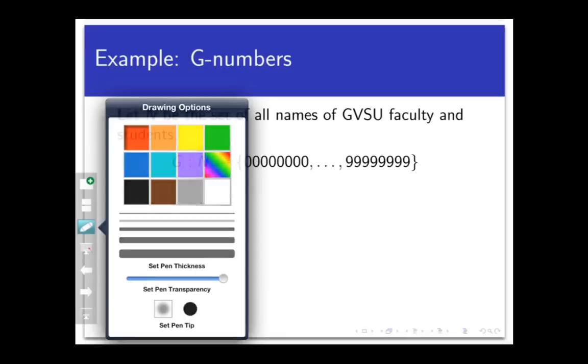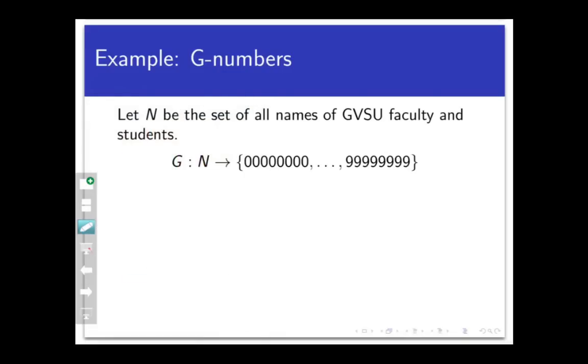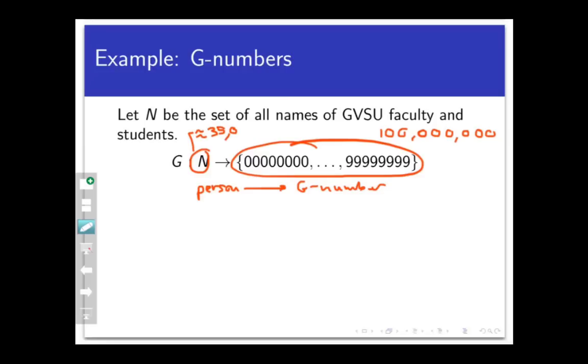Here's a different example. The function that maps the set of all GVSU students and staff to the set of eight-digit integer strings by mapping a person to his or her ID number. We call those G numbers around here. We've seen previously that this is a function because no single person has two different ID numbers, so there's no splitting. And we've also seen that this is an injection, because given two different people, they will map to two different G numbers. So does this function have this so-called everything's covered property? I think the answer is no.